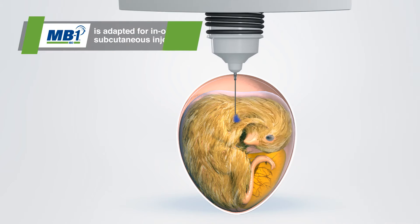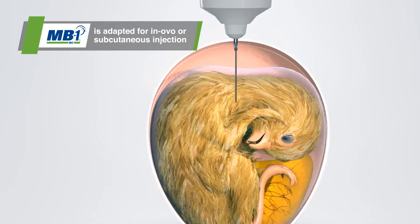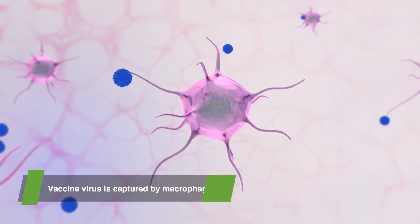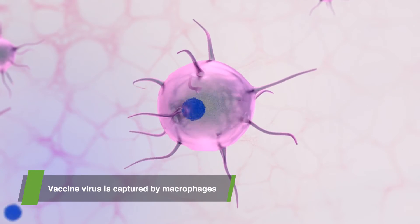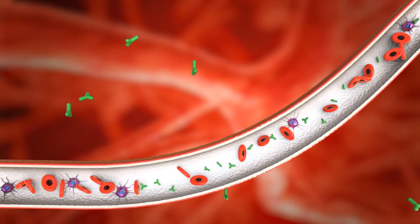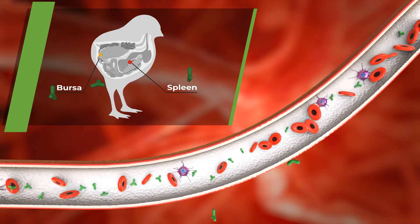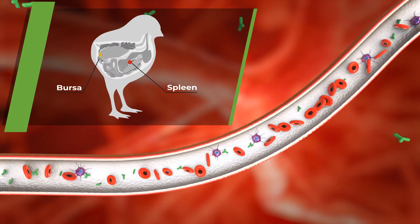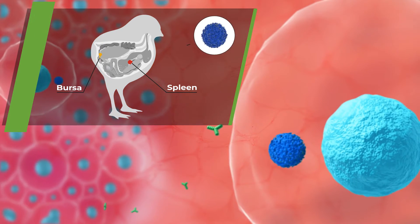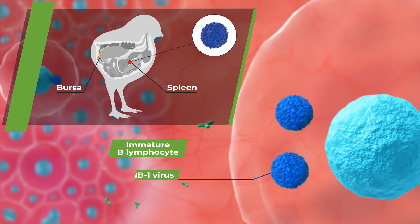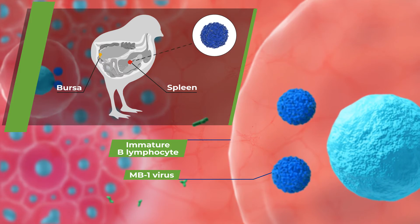After the MB1 vaccine is injected into the chicken, the vaccine virus is captured by macrophages. This captured vaccine virus then migrates in the macrophages to the spleen, where the virus survives and replicates in low numbers.